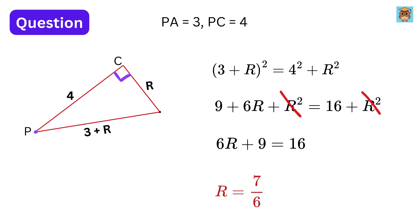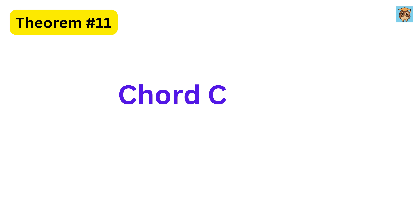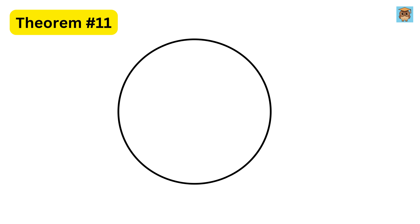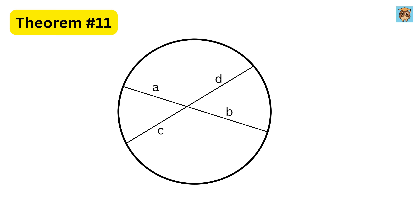We move on to our final theorem, theorem 11: chord-chord power theorem. This theorem states that if two chords intersect inside a circle, with sides labelled A, B, C, and D, then A times B will always be equal to C times D.